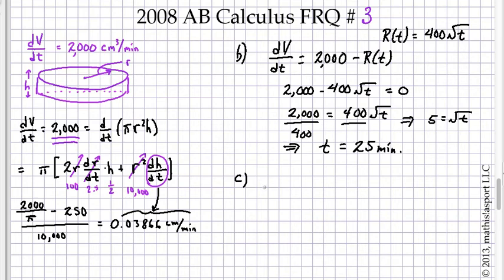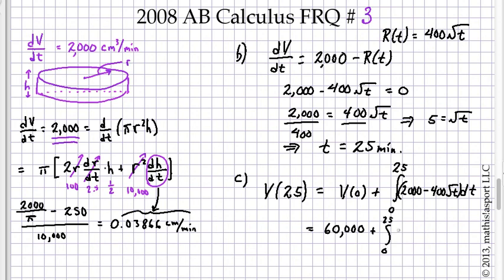Finally, we're asked to set up an integral that explains what the volume of the oil slick is at t equals 25 minutes. We're told to start at some time t equals 0 where they're going to tell us how much oil there is in the oil slick. So we're just going to integrate at that rate that the value is growing at. We know that V(0) is 60,000 cubic centimeters.